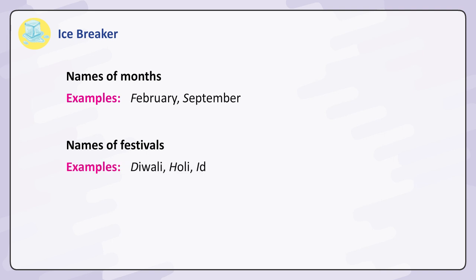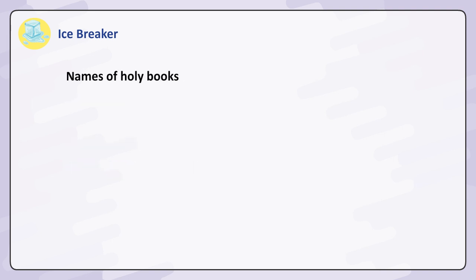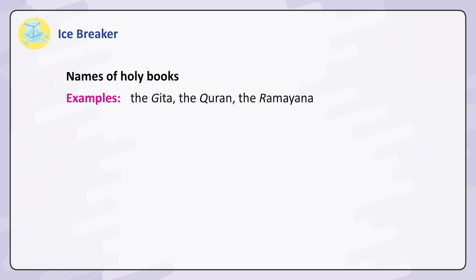Names of festivals — Examples: Diwali, Holi, Eid. Names of holy books — Examples: The Gita, the Quran, the Ramayana. The word 'I' is always written in capital.